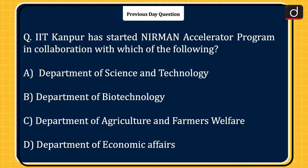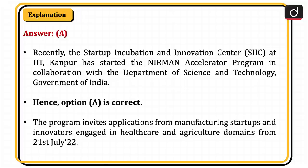The question was: IIT Kanpur has started the NIRMAN accelerator program in collaboration with which of the following? Department of Science and Technology, Department of Biotechnology, Department of Agriculture and Farmers Welfare, or Department of Economic Affairs? The correct answer is option A, Department of Science and Technology. Recently, the Startup Incubation and Innovation Centre (SIIIC) at IIT Kanpur has started the NIRMAN accelerator program in collaboration with the Department of Science and Technology, Government of India.